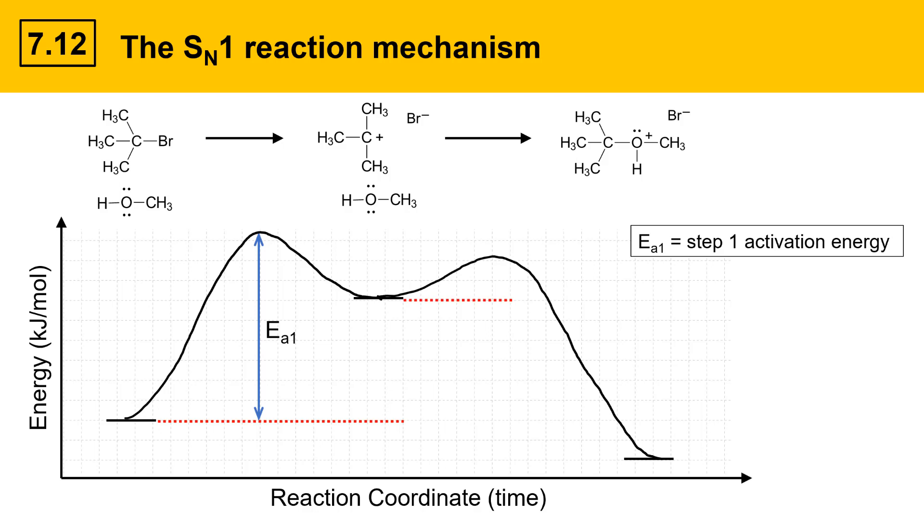and draw an arc that shows the energy transitions as it goes from carbocation to product. Similarly, I can draw a reference line here, measure the distance between the carbocation energy and the height of the second hump, which is the transition state for the second reaction, and label that E sub A2.